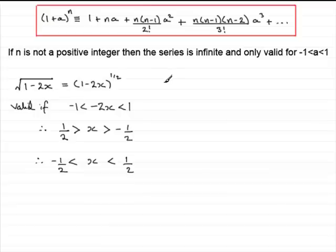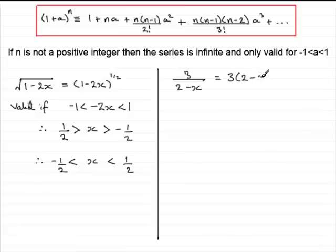Let's try another example. Let's try a fractional one. Suppose we had something like 3 over 2 minus x. If we had this kind of term to expand as a binomial expansion, we would need to bring the 2 minus x up to the top: 3 bracket 2 minus x to the power minus 1.